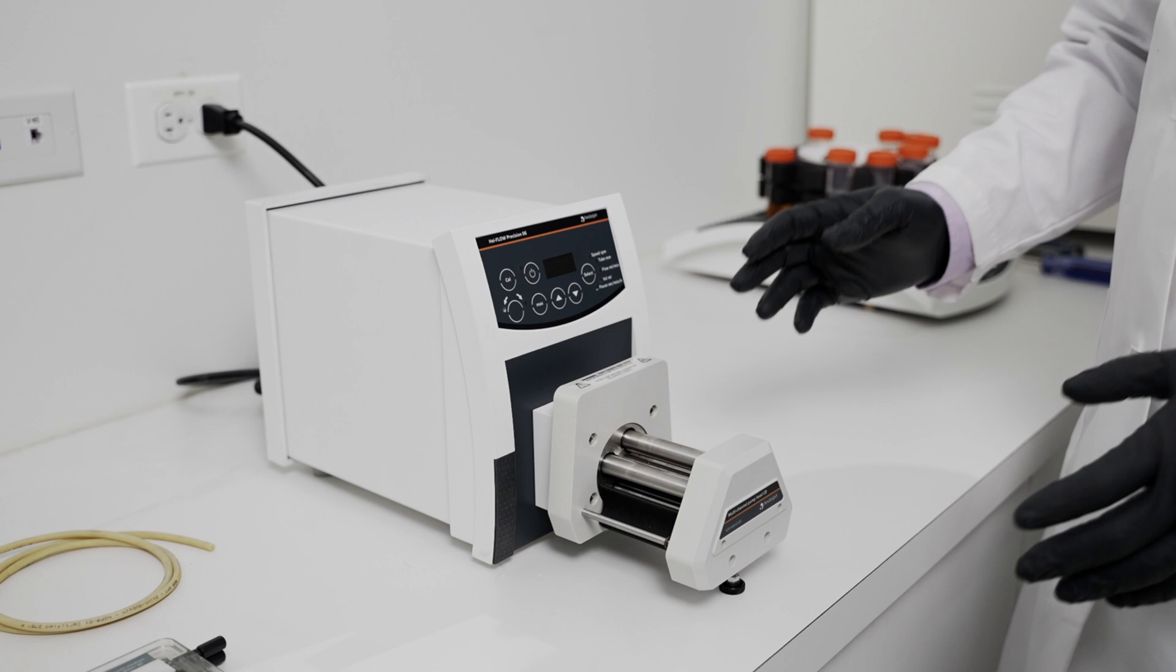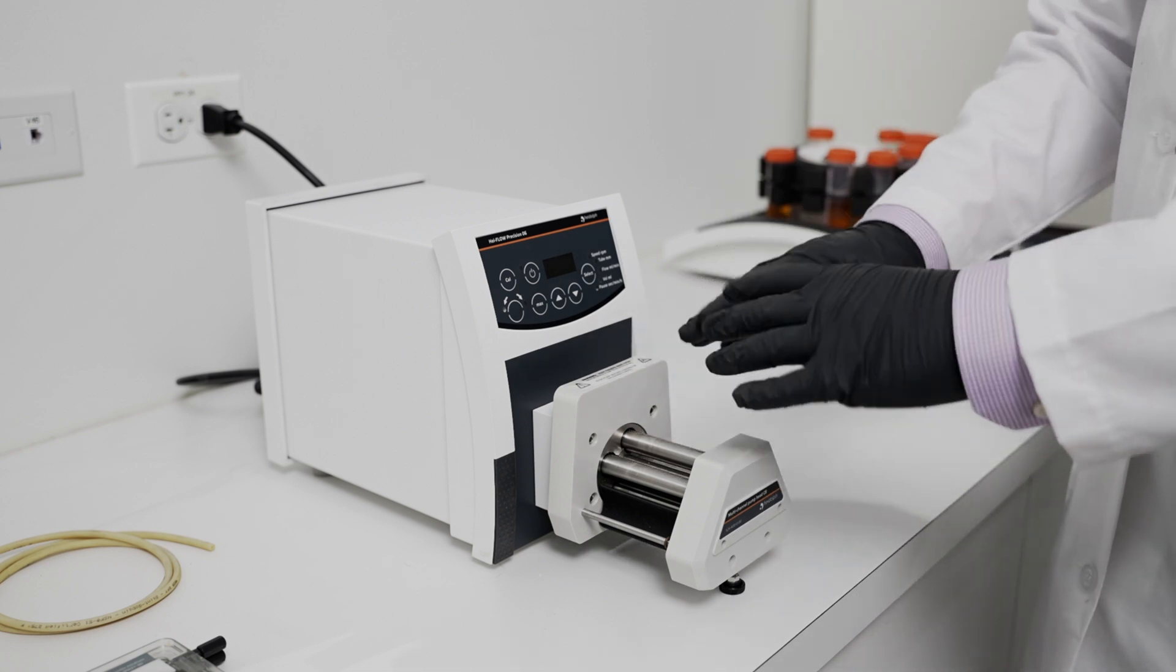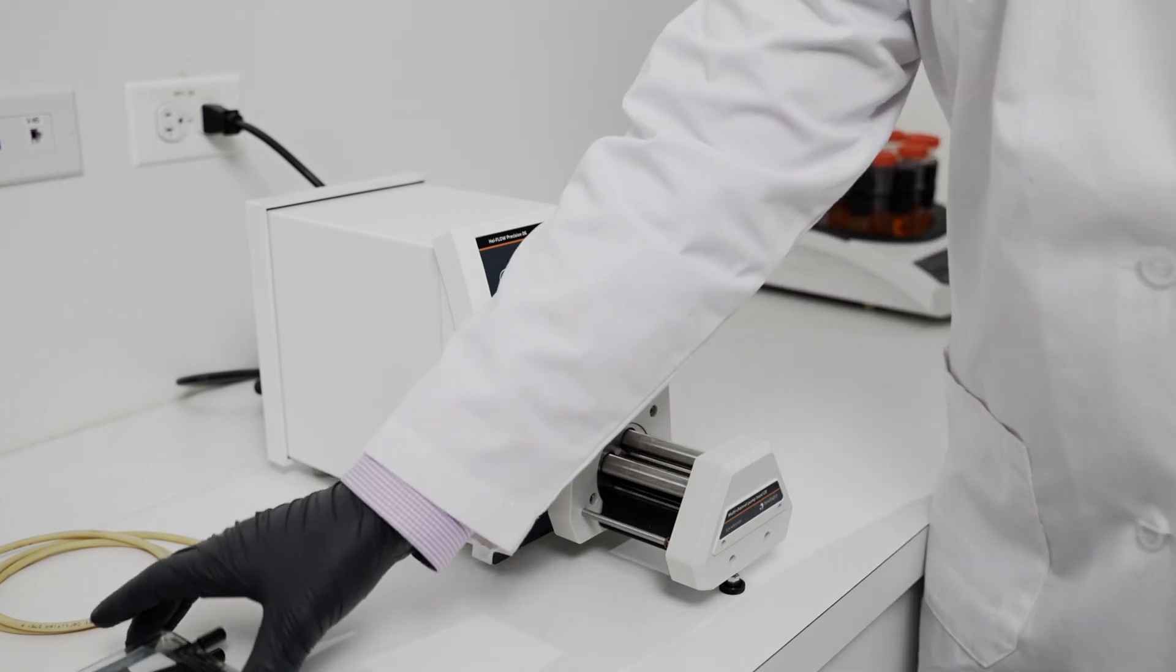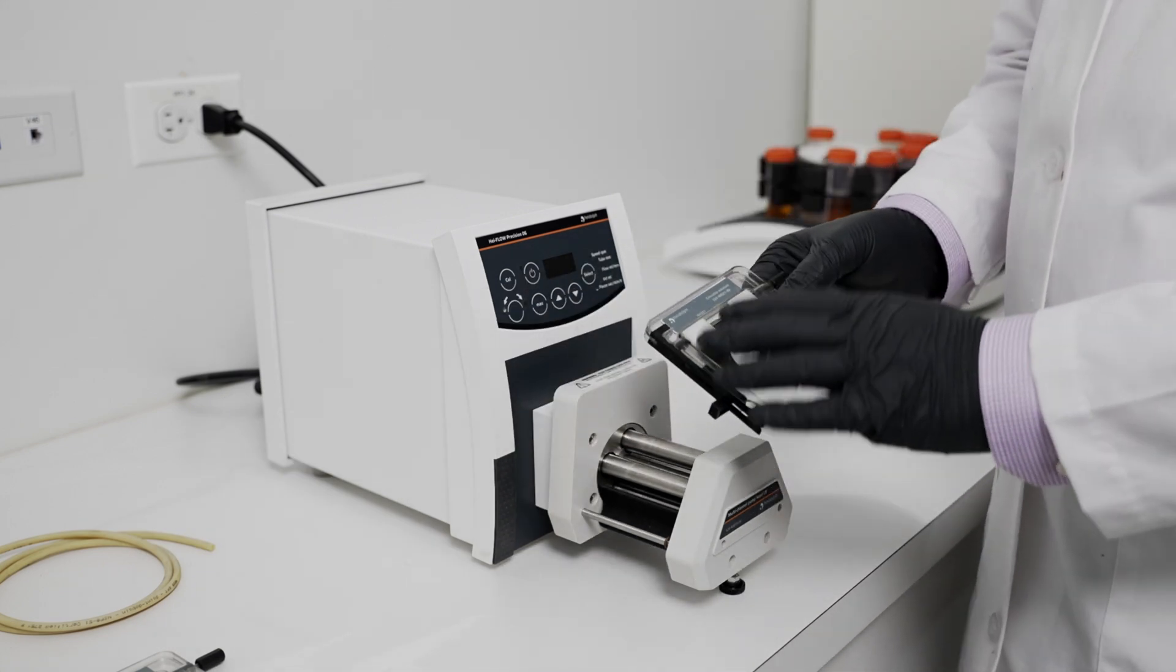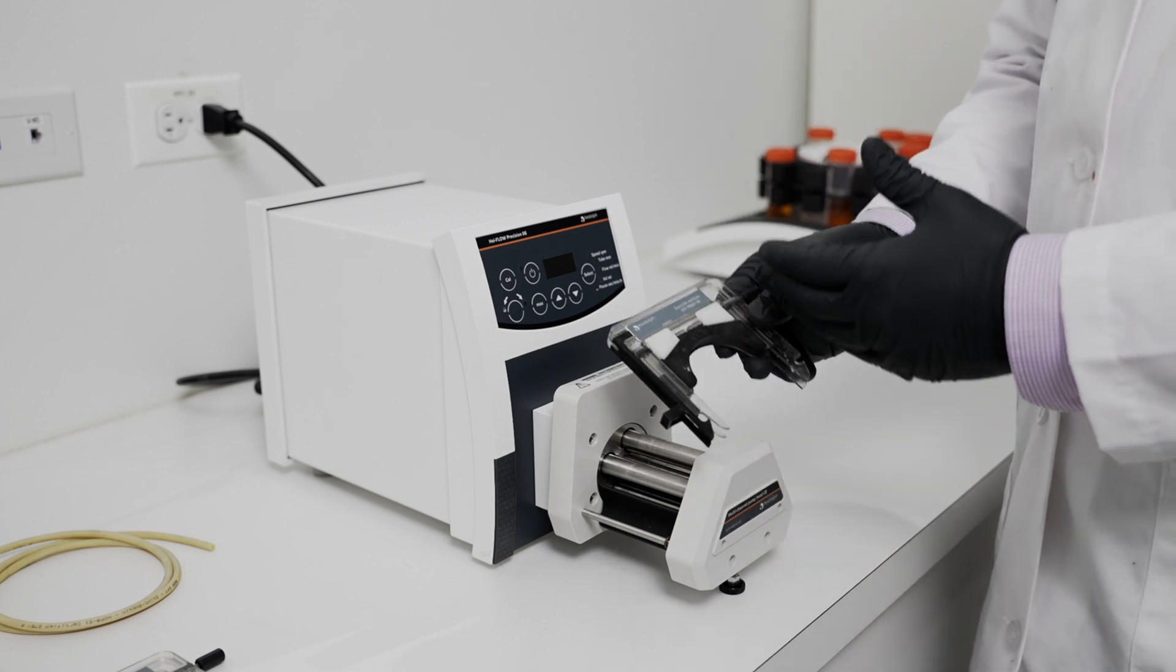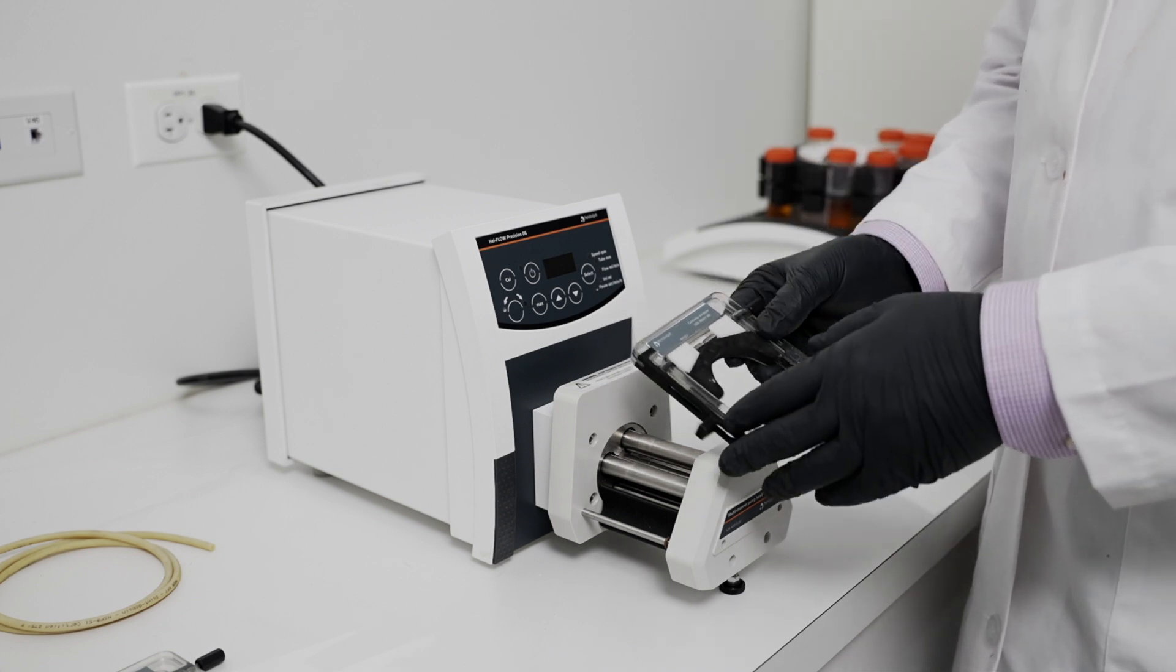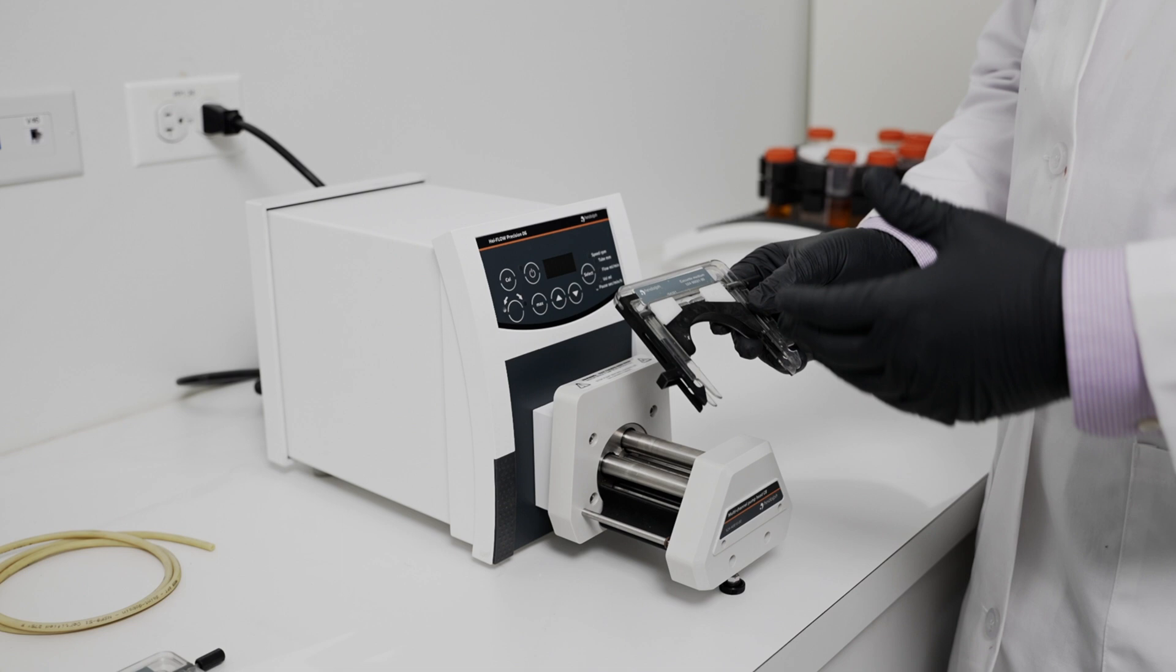Now that we have attached our multi-channel pump head, we can insert our tubing onto the rollers. We're going to do this using a cassette. In our case, we're using the cassette-sized medium. There are three sizes: small, medium, and large, and they're chosen based off of the size of your tubing and the flow rates you are trying to achieve.